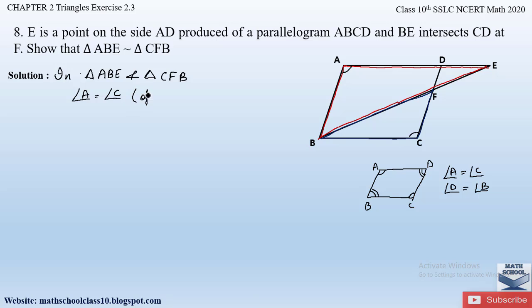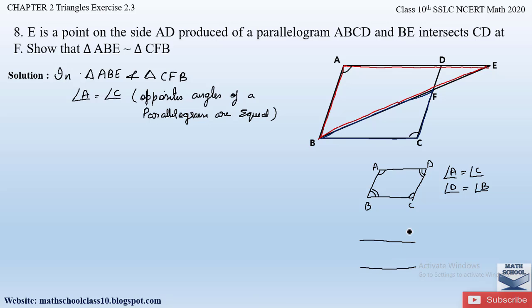Also, opposite sides of a parallelogram are parallel, so AD is parallel to BC. When we consider two parallel lines with a transversal passing through them, a Z-formation appears. I have already explained in my previous videos that whenever a Z-formation occurs, the alternate angles will be equal.